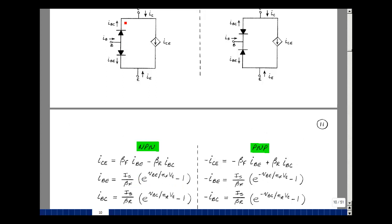The current for the base collector diode is likewise a Shockley equation, with I sub S divided by beta R as the multiplier. This controlled source is the difference of these two currents times the scalar beta F and beta R.